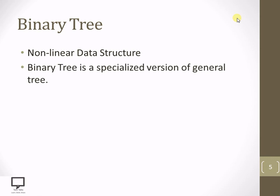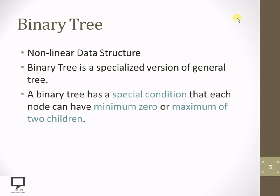The binary tree is a specialized version of a general tree. The specialty is that in every binary tree, every node can have a minimum of 0 or 1, or a maximum of 2 children. The maximum number of children is fixed at 2, and that's why the name is binary tree — binary means 2.